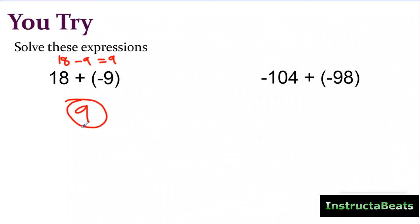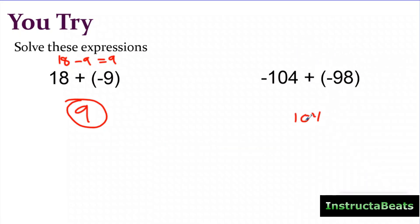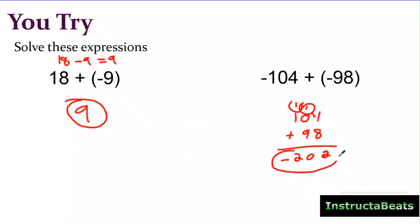Let's try (–104) + (–98). Both add-ins are negative — the same sign — so I simply add them: 104 plus 98. I'll regroup: 4 plus 8 is 12, carry the 1, so my answer is 202. The sign that was the same was negative, which means I make my answer negative: negative 202.